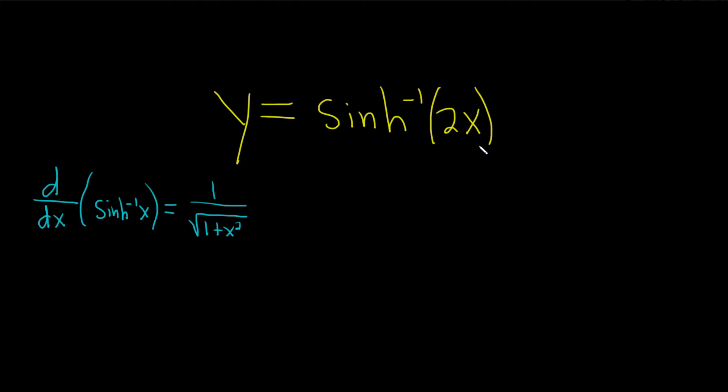So here we're going to have to use the chain rule because there's a 2. So dy dx is equal to, we'll take the derivative of sinh inverse, so we'll use this formula here. So 1 over the square root of 1 plus parentheses 2x squared.